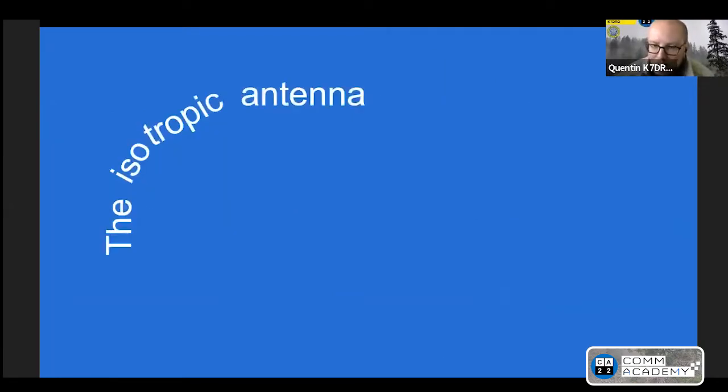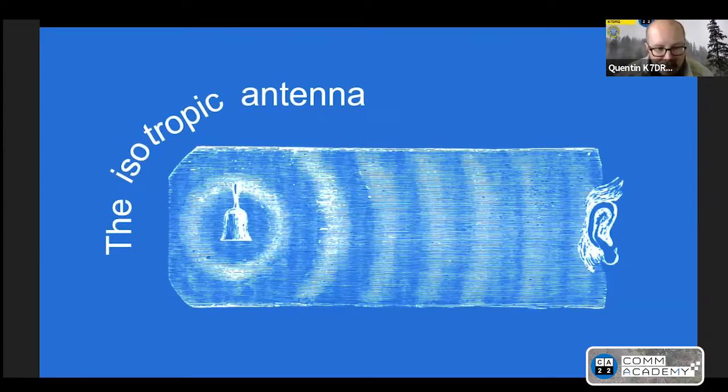We start as all antenna modeling does with the isotropic antenna, a purely theoretical antenna. We can't build this, but if we could, it would radiate equally in all directions, much like this bell. All we can do to improve our antennas is squeeze the gain in a certain direction. Imagine this as a balloon. We're not able to get free gain. Assuming your antenna is radiating 100% efficiently, all you're able to do is squeeze this sphere of radiation in the direction you want. That's why we talk about directional antennas, where gain gets significant in one direction at the expense of gain in other directions.